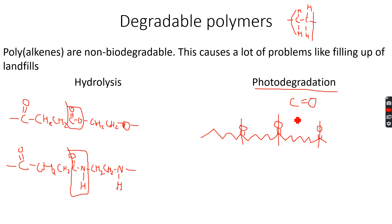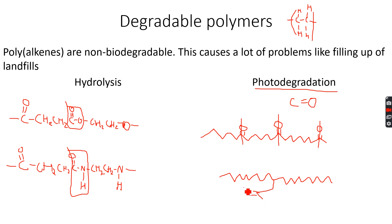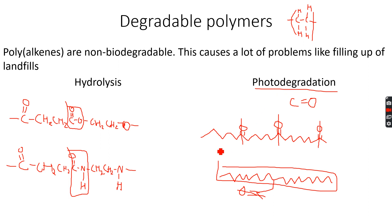Photo degradation only happens when the carbonyl group is inside the polymer chain, not as a side chain or branch. If the C=O were branching off the main chain, it would only break that branch and not the entire polymer chain. So the carbonyl group must be within the main chain. This process is photo degradation, and together with hydrolysis, these are two ways in which certain types of polymers can be broken down.